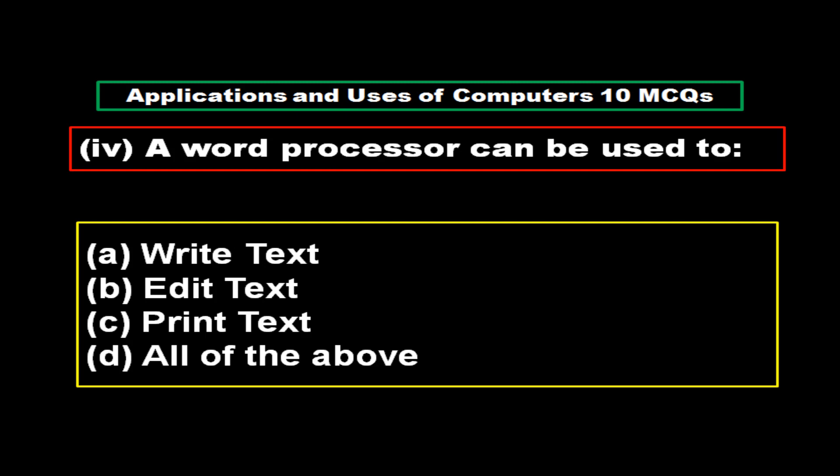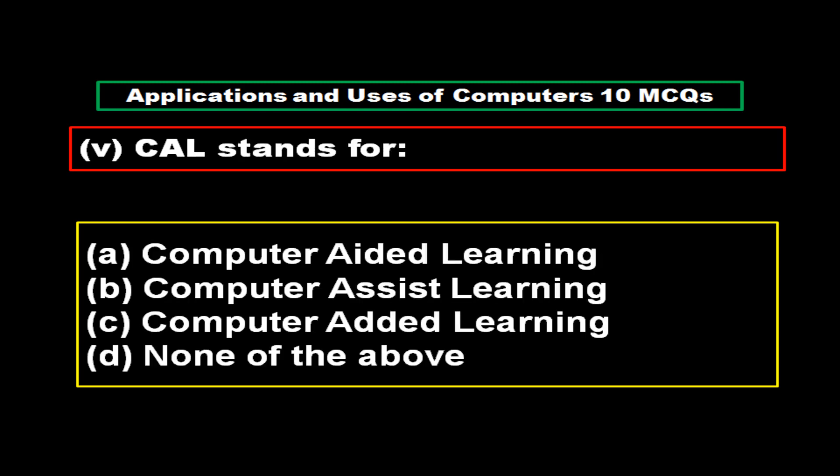A word processor can be used to: Option A Write Text, Option B Edit Text, Option C Print Text, Option D All of the above. And the right answer is Option D: All of the above. CAL stands for Computer Aided Learning.